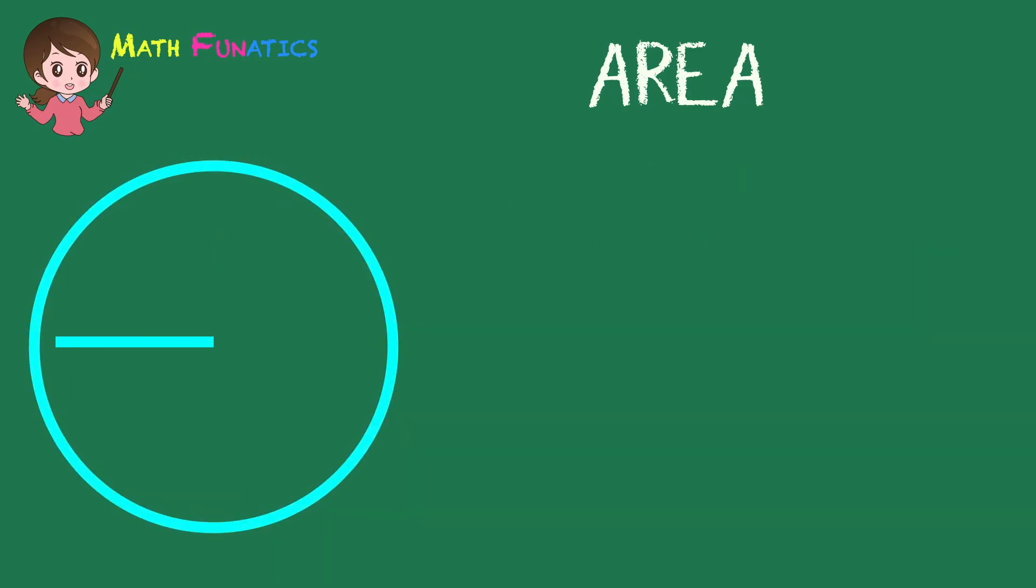What if the radius of a circle is 9 inches? Again, let us use A equals pi times the square of r. Replace the pi symbol with 3.14. Next, replace square of r with 9 times 9.